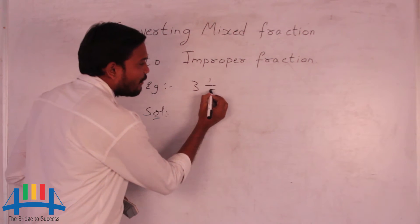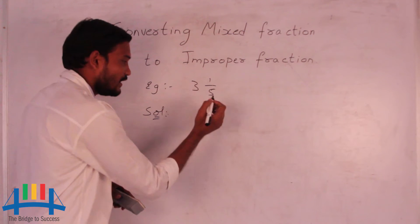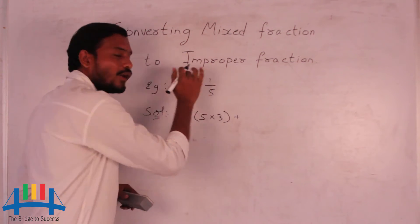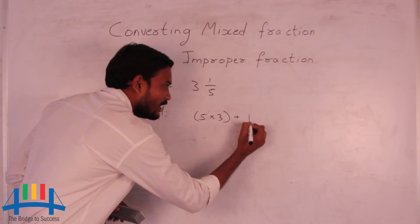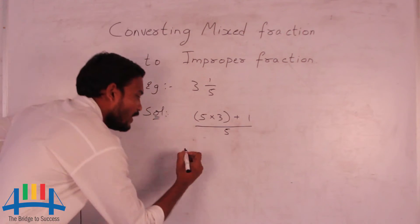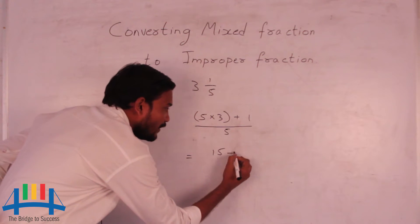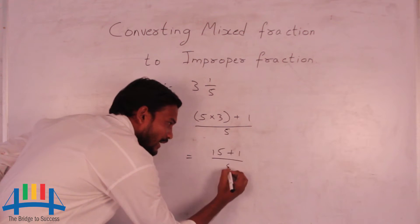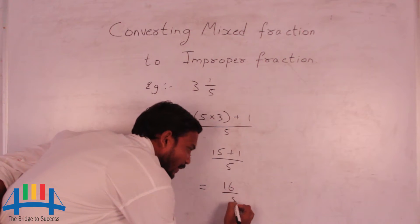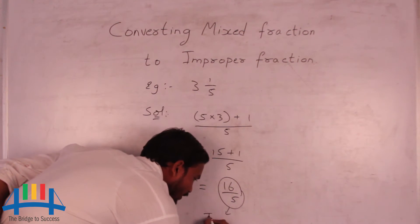The denominator of the fractional part should be multiplied with the whole part — that means 5 into 3 — and this product should be added to the numerator of the fractional part, that is 1. The denominator remains as it is, that is 5. We know that 5 times 3 is 15, and adding 1 gives us 16. So the result is 16 by 5, which is an improper fraction.